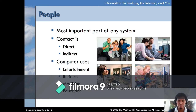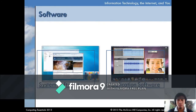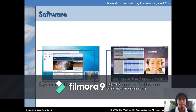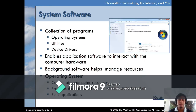Software refers to instructions given to the computer. Software is another term for programs — they are commonly known as programs. There are two categories of software: system software and application software.